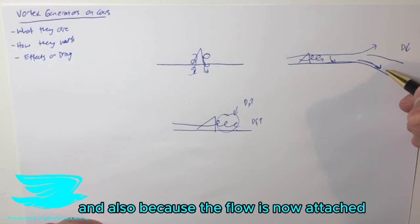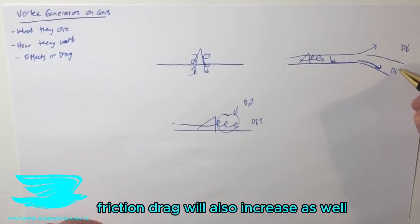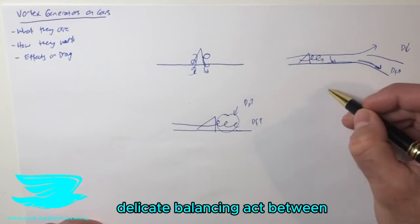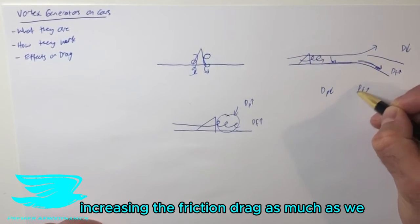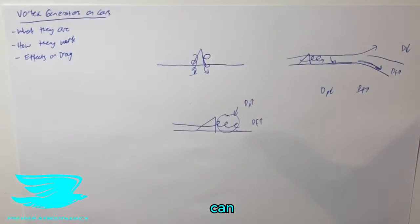And also, because the flow is now attached, the friction drag will also increase as well. So this is a delicate balancing act between dropping the pressure drag enough and not increasing the friction drag as much as we can possibly do.